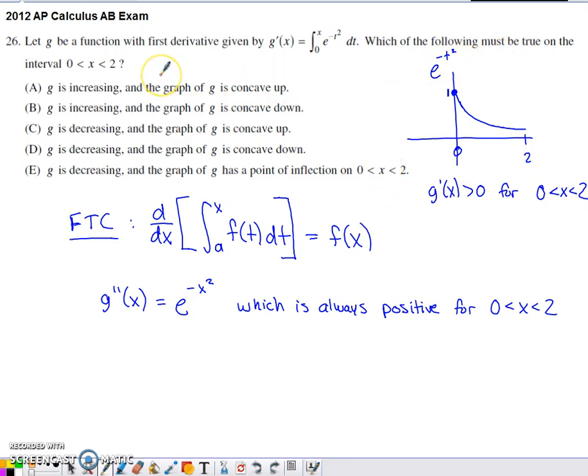Which of the following must be true on the interval from 0 to 2? So if you look at all of these options, the options involve g increasing or decreasing, and then g concave up, concave down, or having an inflection point somewhere on the interval 0 to 2.